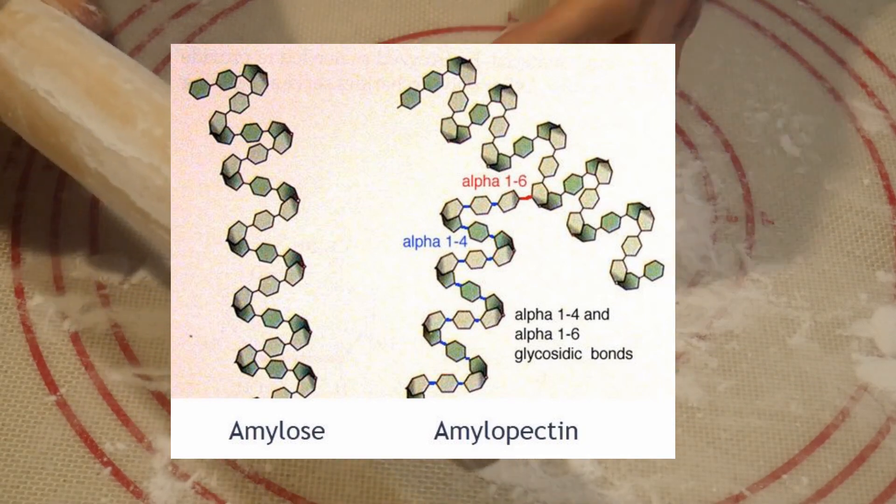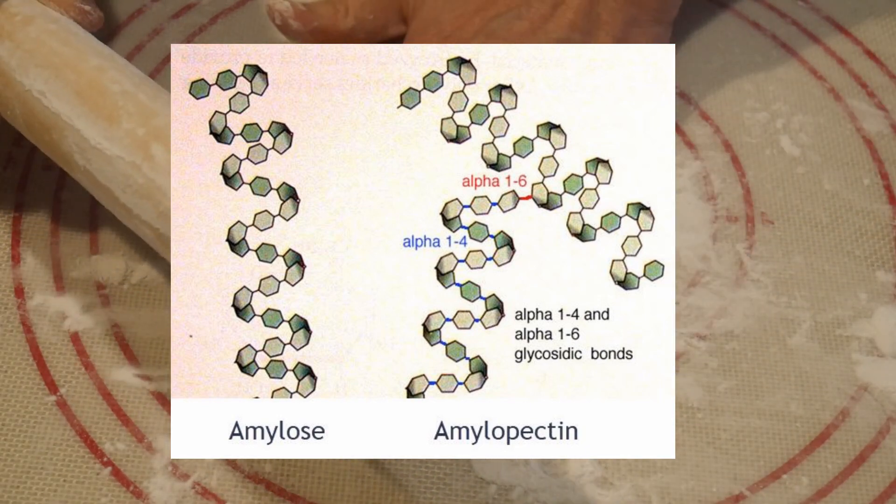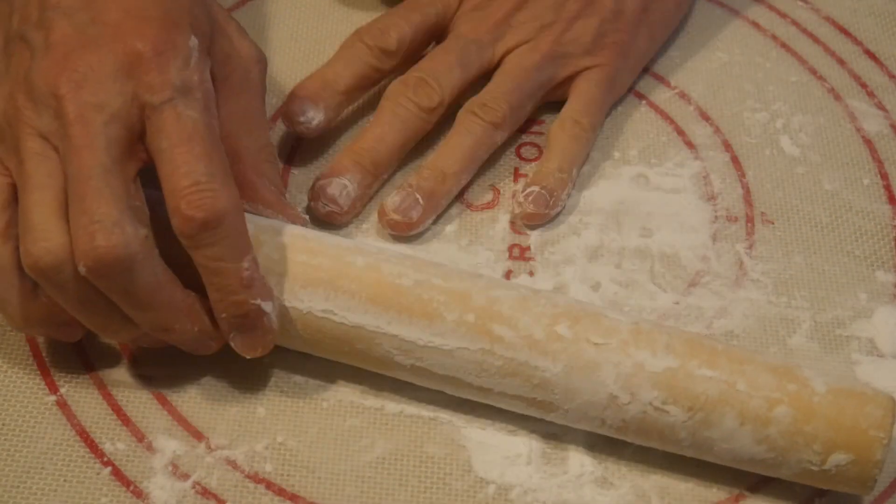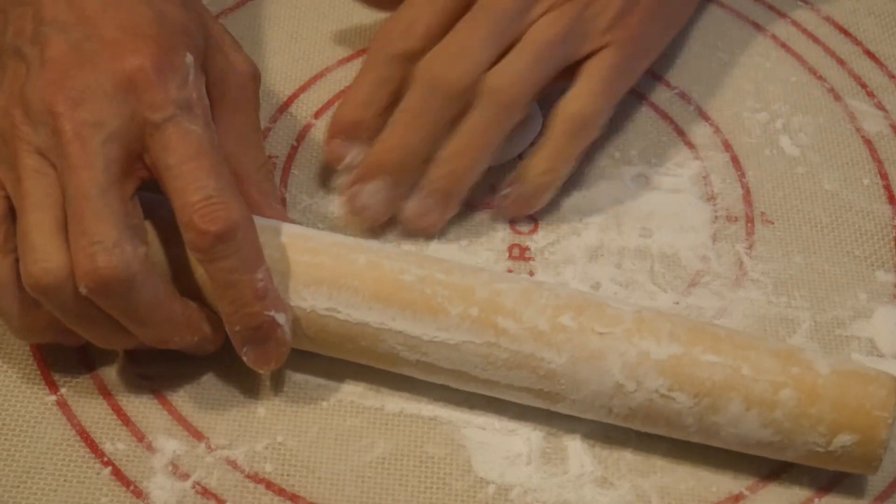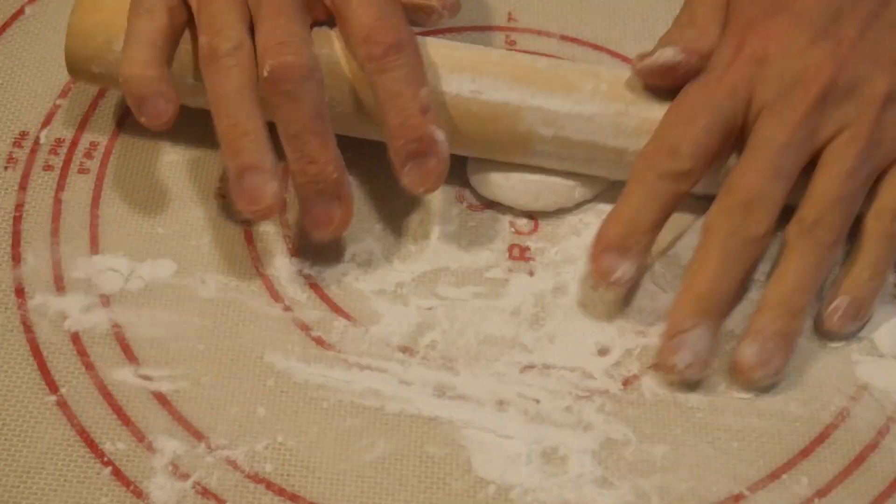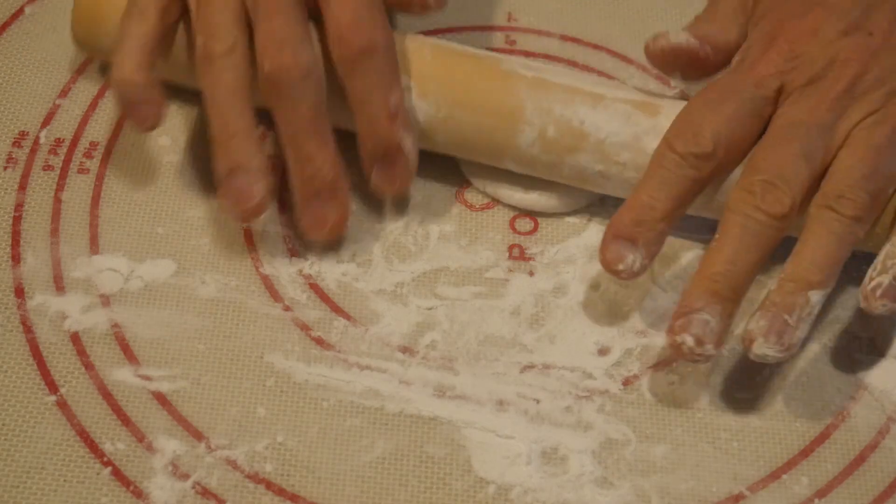The first one is known as amylose, and the second one is known as amylopectin. And starch from different sources contain a different ratio of these two polysaccharides.